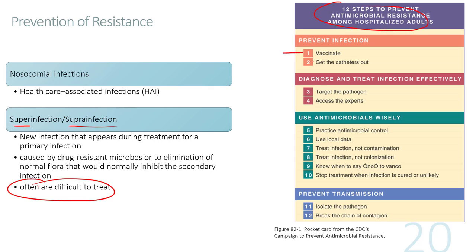The 12 steps to prevent resistance include: vaccinate; remove indwelling catheters such as Foley catheters as soon as possible because they are an entryway for bacteria; once an infection is diagnosed, identify the pathogen and target it with expert opinion; use local data to determine which infections are prevalent; practice good antimicrobial control using narrow spectrum antibiotics to target specific microbes; and follow additional steps for hospitalized patients.